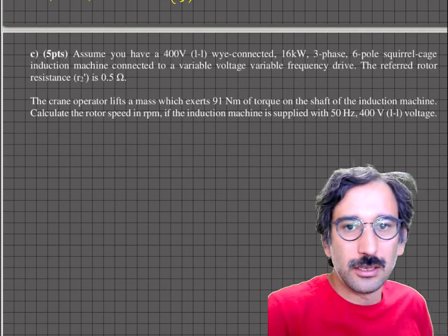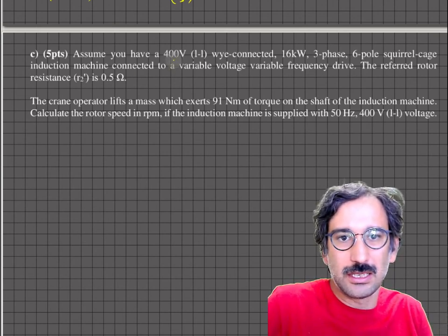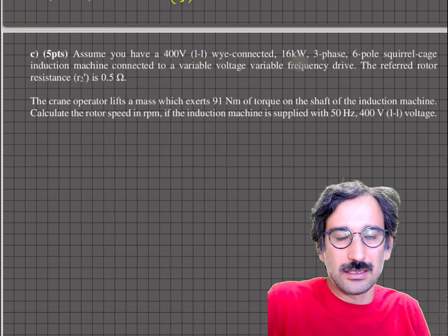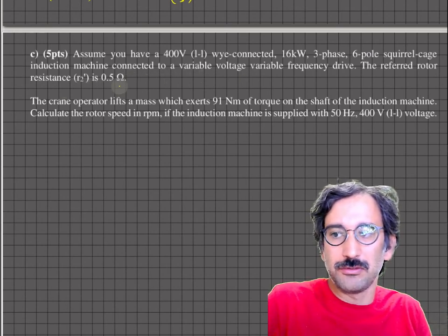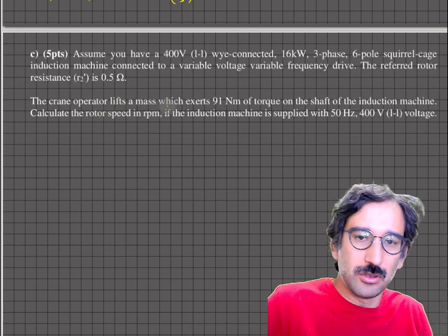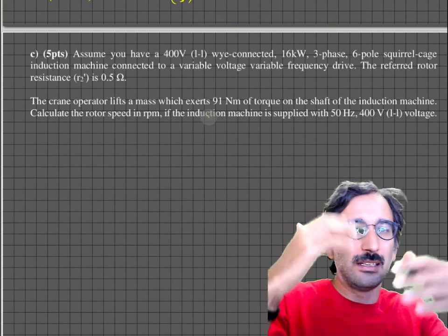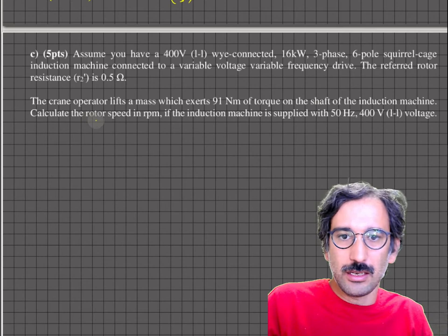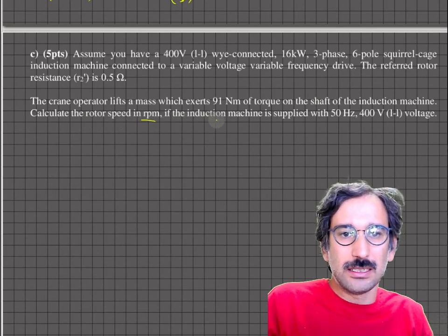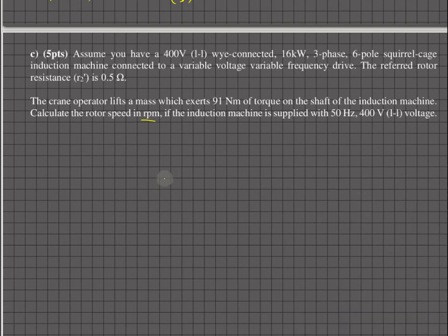Now with actual numbers: we have a 400 volt line-to-line, Y-connected, 16 kilowatt, six-pole squirrel cage induction machine. The referred rotor resistance R2' is 0.5 ohms. The crane operator lifts a mass that exerts a torque of 91 newton meters. There may be drums and gearboxes involved, but at the end of the day the load applies an equivalent torque of 91 newton meters. We need to calculate rotor speed in RPM.